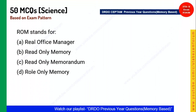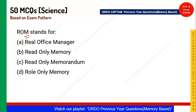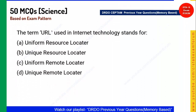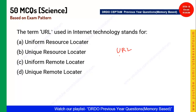Next question: What does ROM stand for? M stands for Memory, O stands for Only, R stands for Read — so ROM is Read Only Memory. Option B is the correct answer.